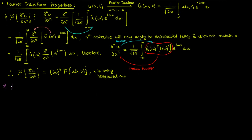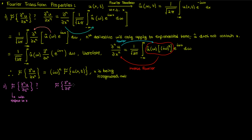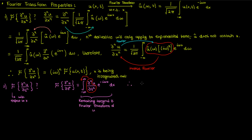The second property is the Fourier transform of a derivative with respect to a variable not involved in the transform — in this case we're Fourier transforming with respect to x but our derivative is with respect to t. By the definition of the Fourier transform, the transform of the nth time derivative of u is given by the following. Since I'm not integrating with respect to t I can take the time derivative outside the integral, leaving the Fourier transform of u inside. So the Fourier transform of the nth time derivative of u is simply the nth time derivative of u-hat.